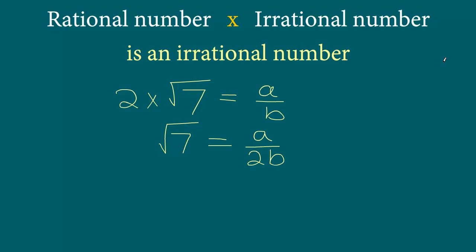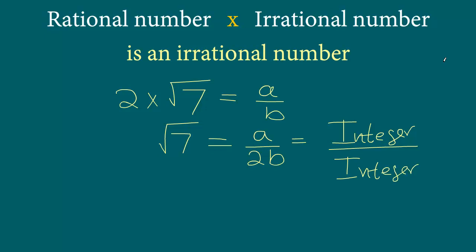Now, a is an integer. And 2 times b — since b is an integer — 2b will be another integer. So we have integer divided by integer, and b is not equal to 0, so the denominator is not equal to 0. That means on the right hand side we have a rational number, so we have square root 7 equal to a rational number.